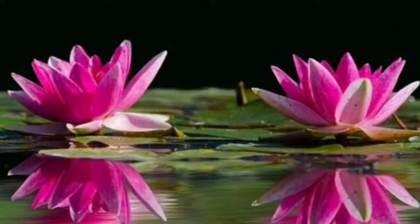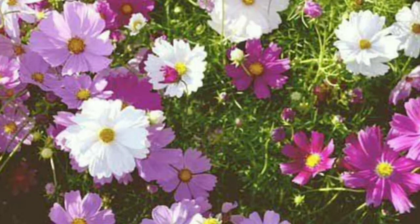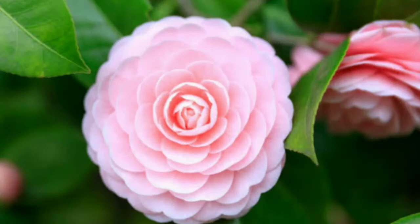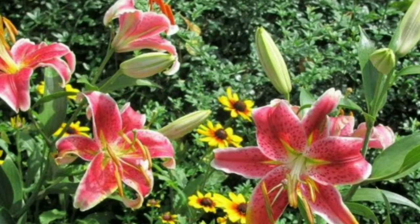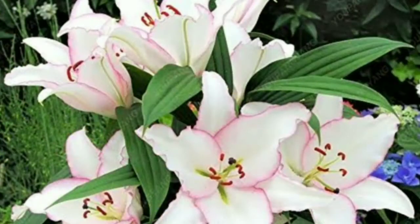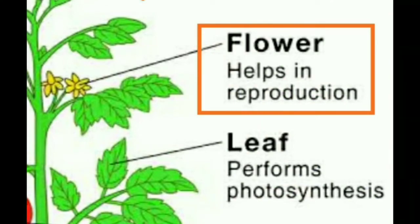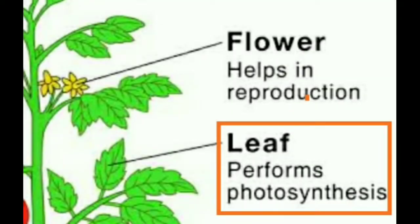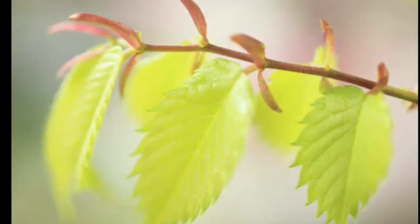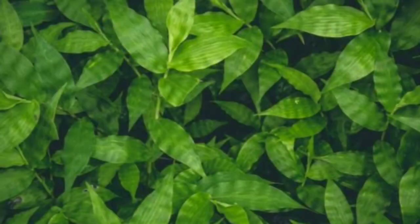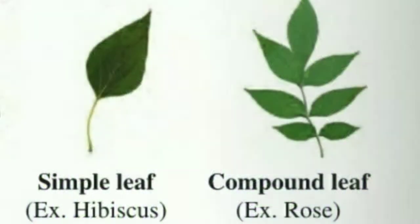The flower is the most attractive part of a plant. It is connected to the stem by a stalk, which may be long or short. A flower has a typical color and shape and is an important means of reproduction. The leaf is flat and plays an important role in the production of food. Leaves are mainly of two types: simple and compound leaves.